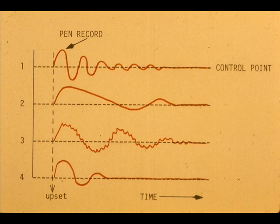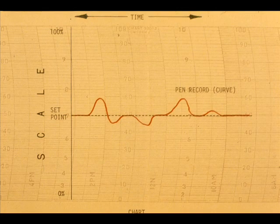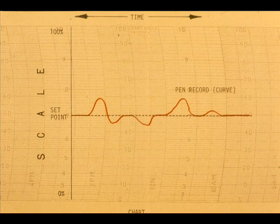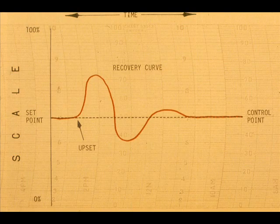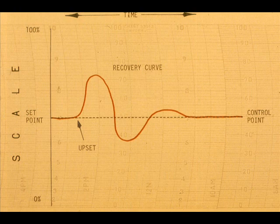First, we must know the type of process or PIN record we wish to achieve as a result of proper tuning. Four different records are shown here. We will call the PIN record drawn by the process measurement a curve. The record the process draws on returning to the control point after an upset is called the recovery curve.